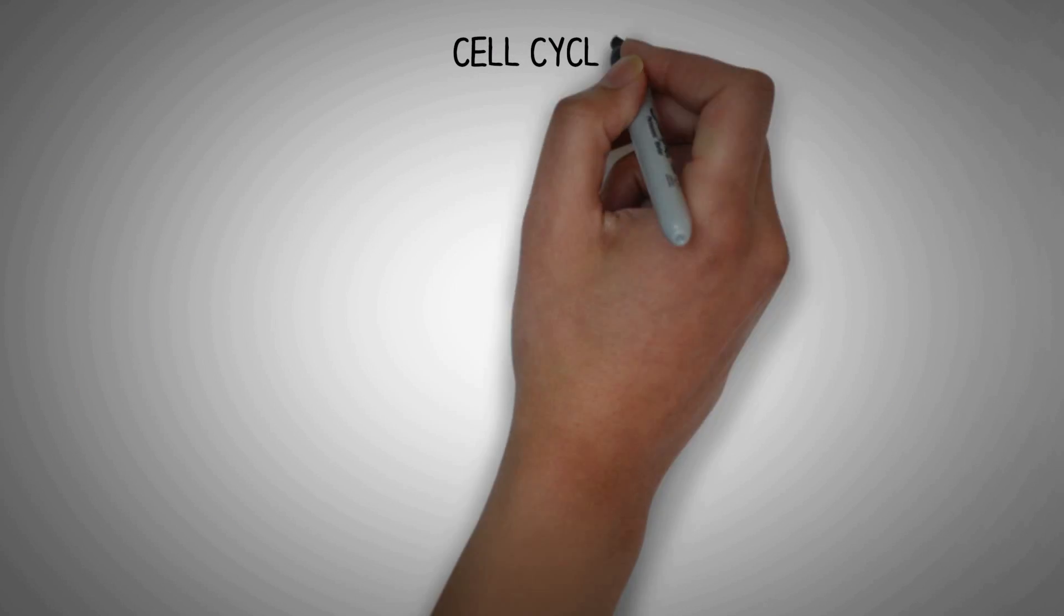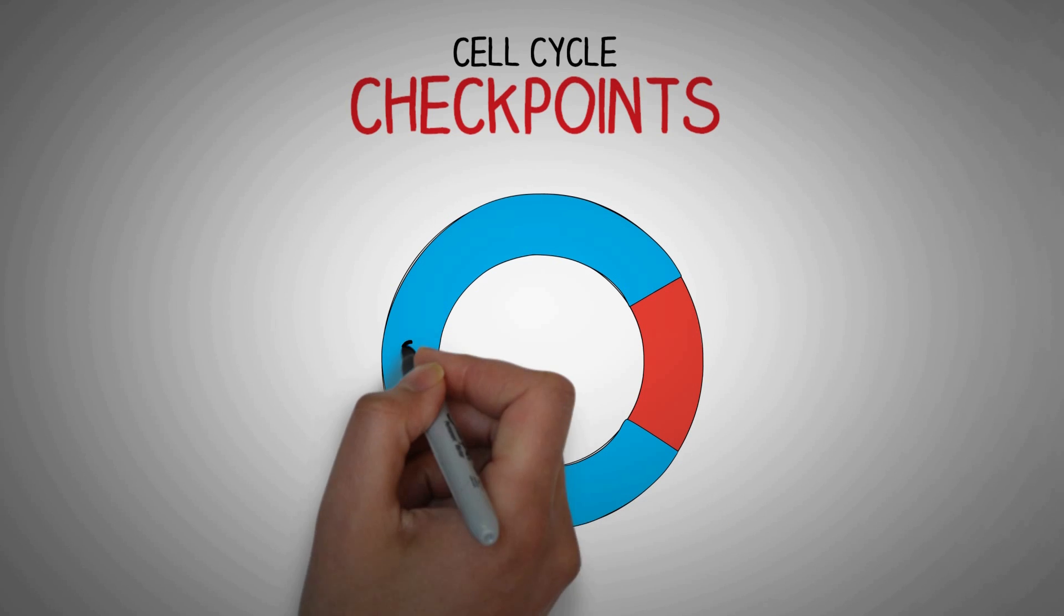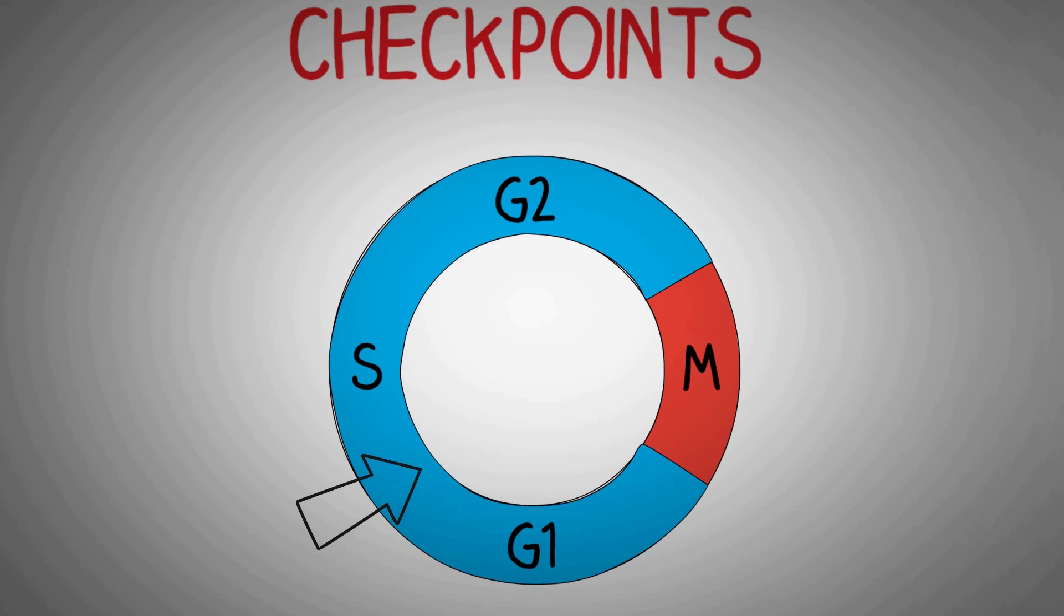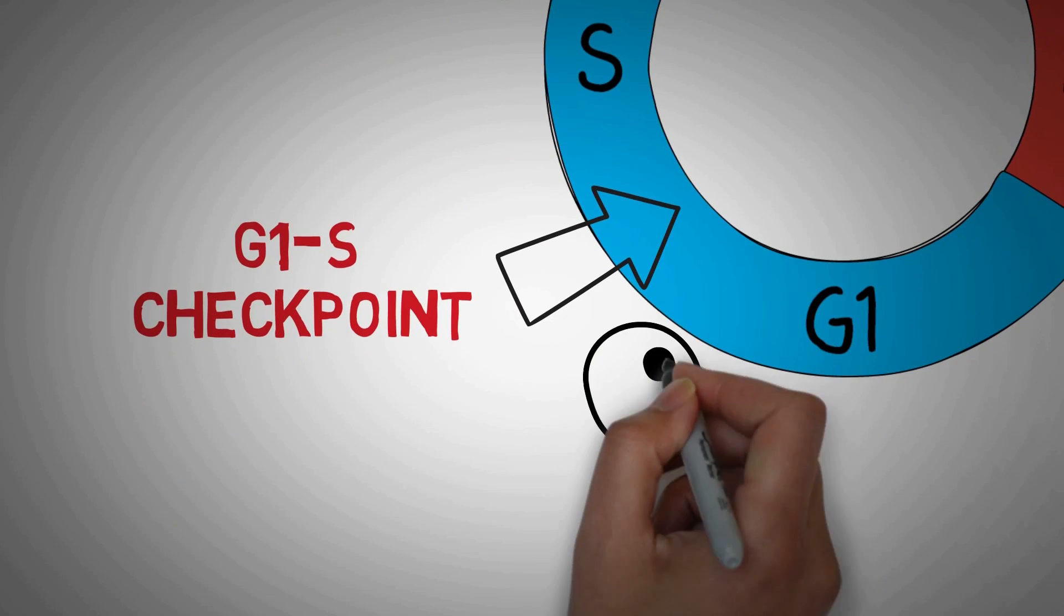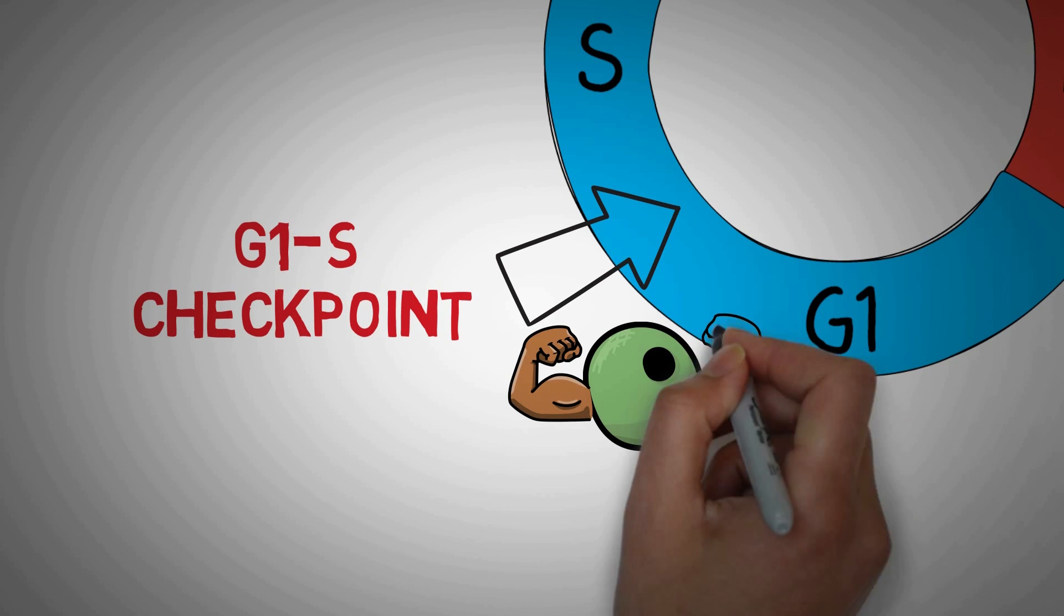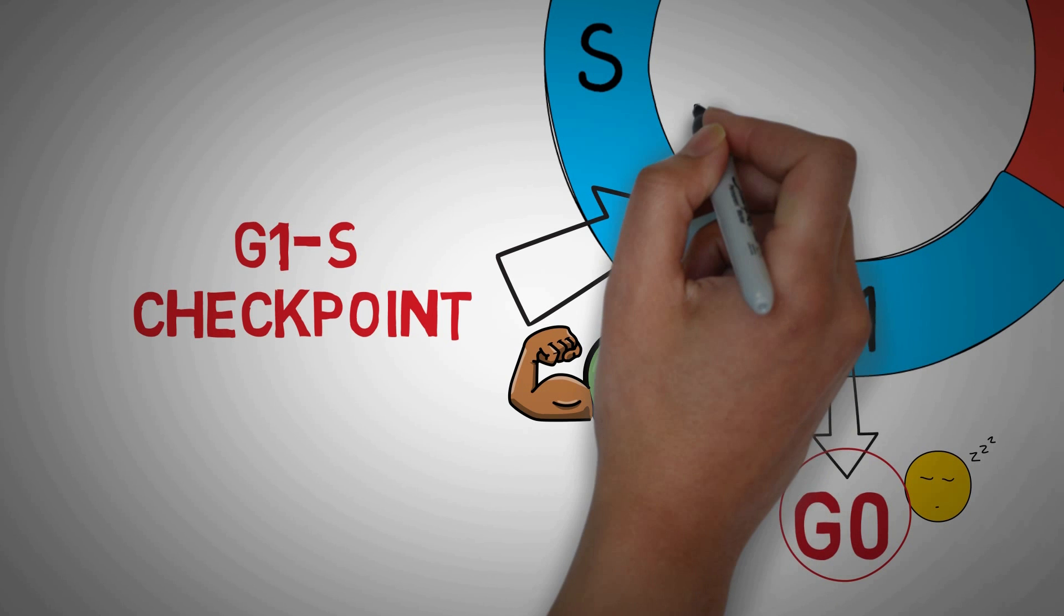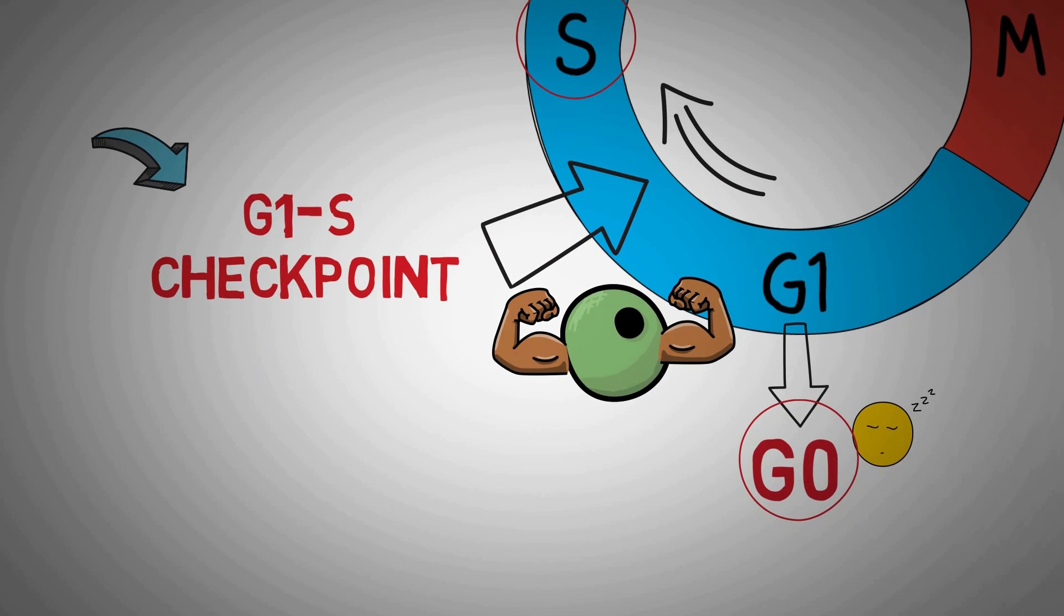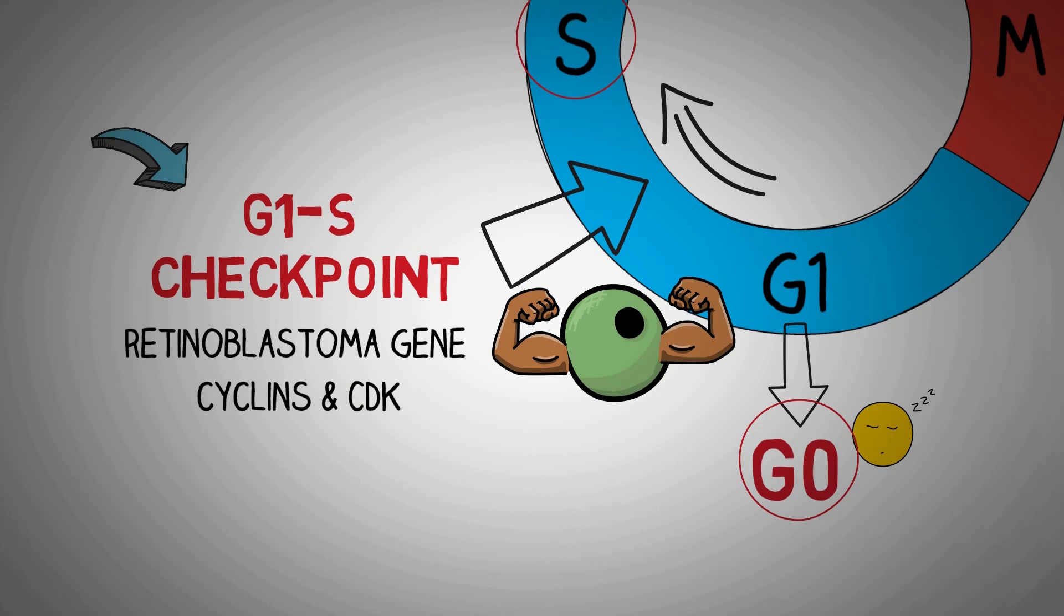Lastly we have one important topic left which is the cell cycle checkpoints. Cell cycle checkpoints are control mechanisms which ensure proper division of the cell. If we look at the interface we have two important checkpoints: one after the G1 phase known as the G1S checkpoint and the second after the G2 phase known as the G2M checkpoint. As we discussed during the G1 phase the cell grows and forms new organelles and after the G1 the cell can go into the quiescent stage the G0 where it does not replicate or it can enter the S phase and proceed with the cell division. Whether the cell will go into the G0 phase or the S phase is decided at the G1S checkpoint. Here the RB or the retinoblastoma gene plays an important role along with cyclins and cyclin dependent kinases.